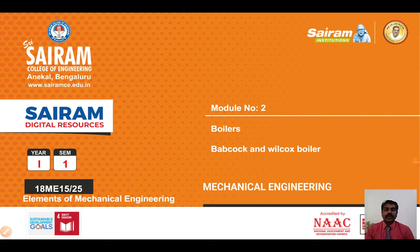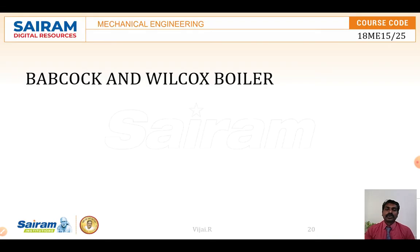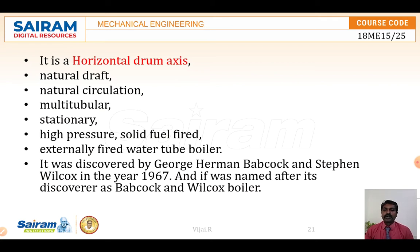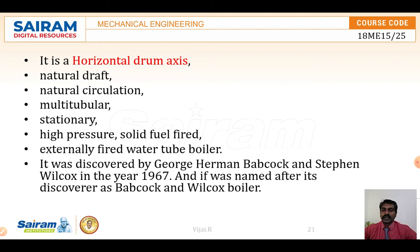In this video we are going to see about the fire tube boiler and the water tube boiler, which is the Babcock and Wilcox boiler. Boilers are used to produce steam by applying heat to water. The Babcock and Wilcox boiler is a horizontal drum axis, natural draft, natural circulation, multi-tubular, stationary boiler.